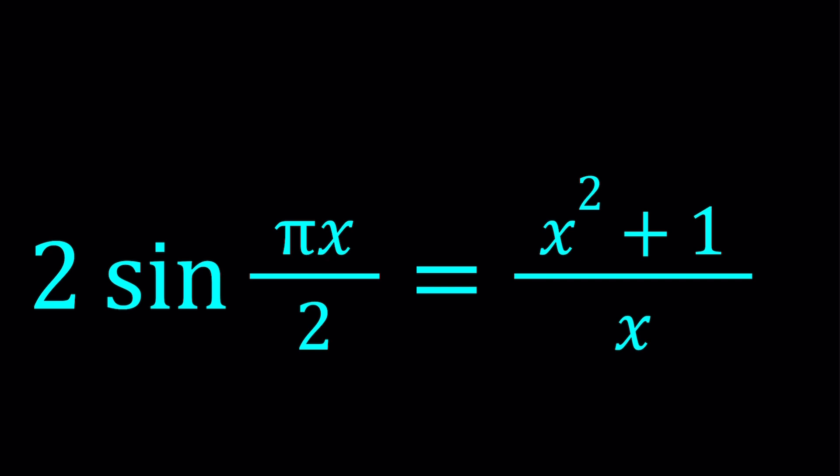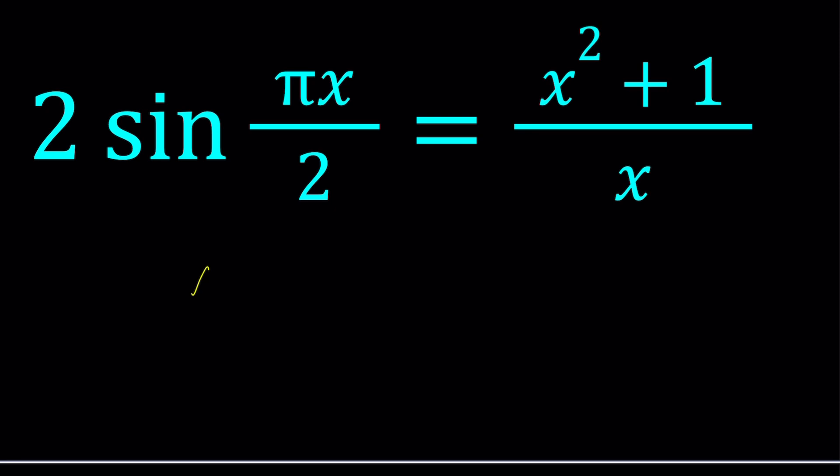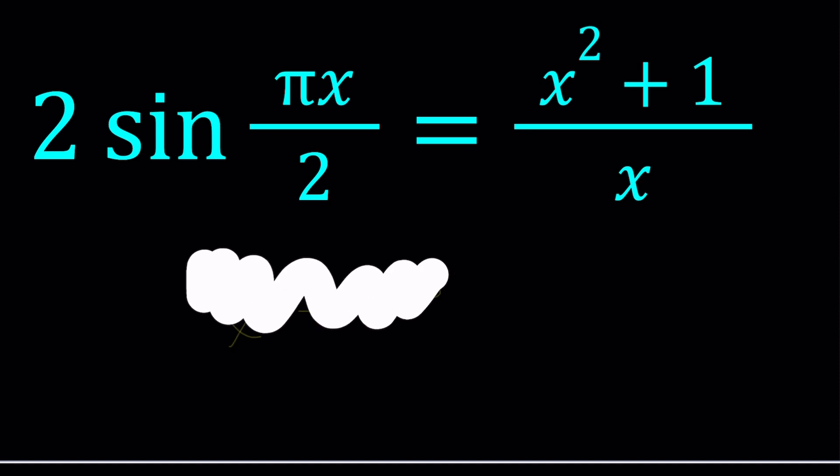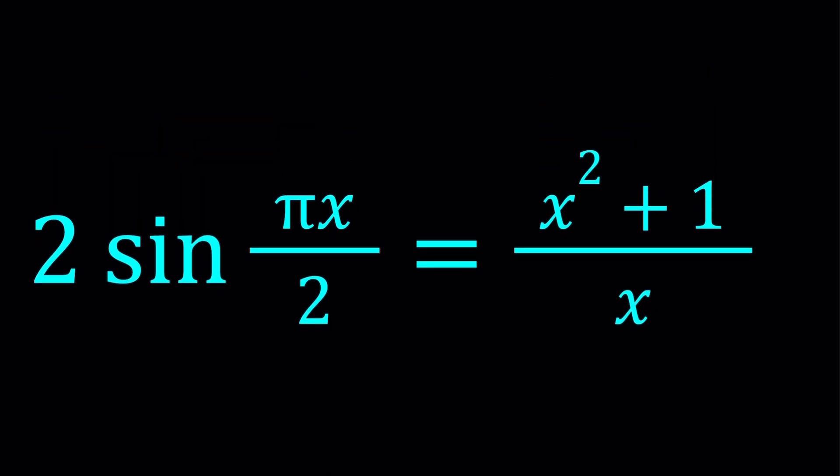There are different kinds of functions and you cannot solve this problem by normal standard means. If you had polynomials or rationals on both sides then you could probably solve it. Cross multiply, that becomes a polynomial, easy. But this is very different because we have the trigonometric and the rational. So how do we deal with these kinds of equations?